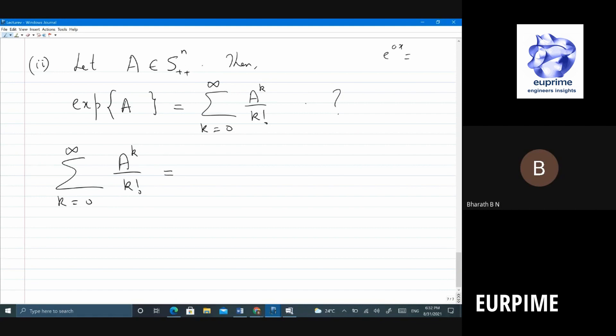What is this? A is symmetric, so I can do eigenvalue decomposition. So what do I get? U lambda U transpose, whole power k, for k factorial.